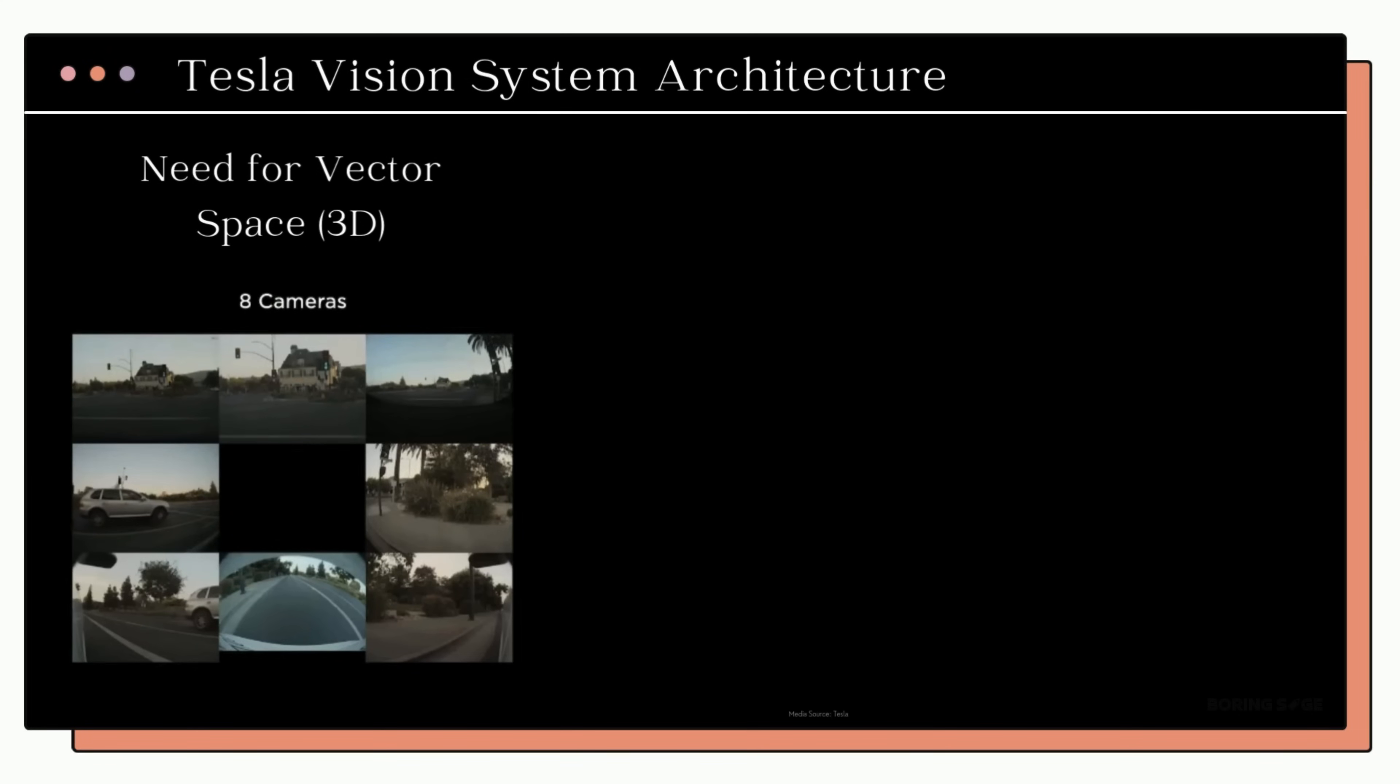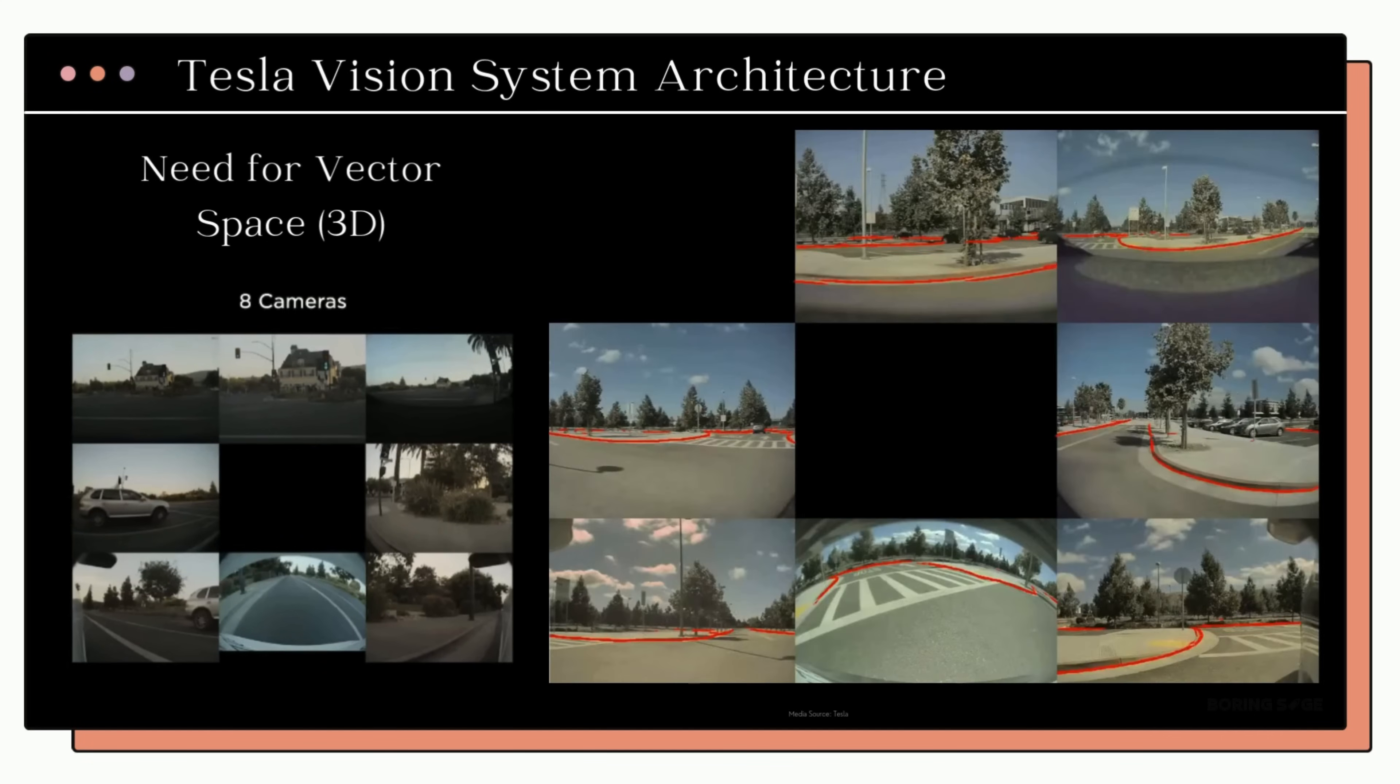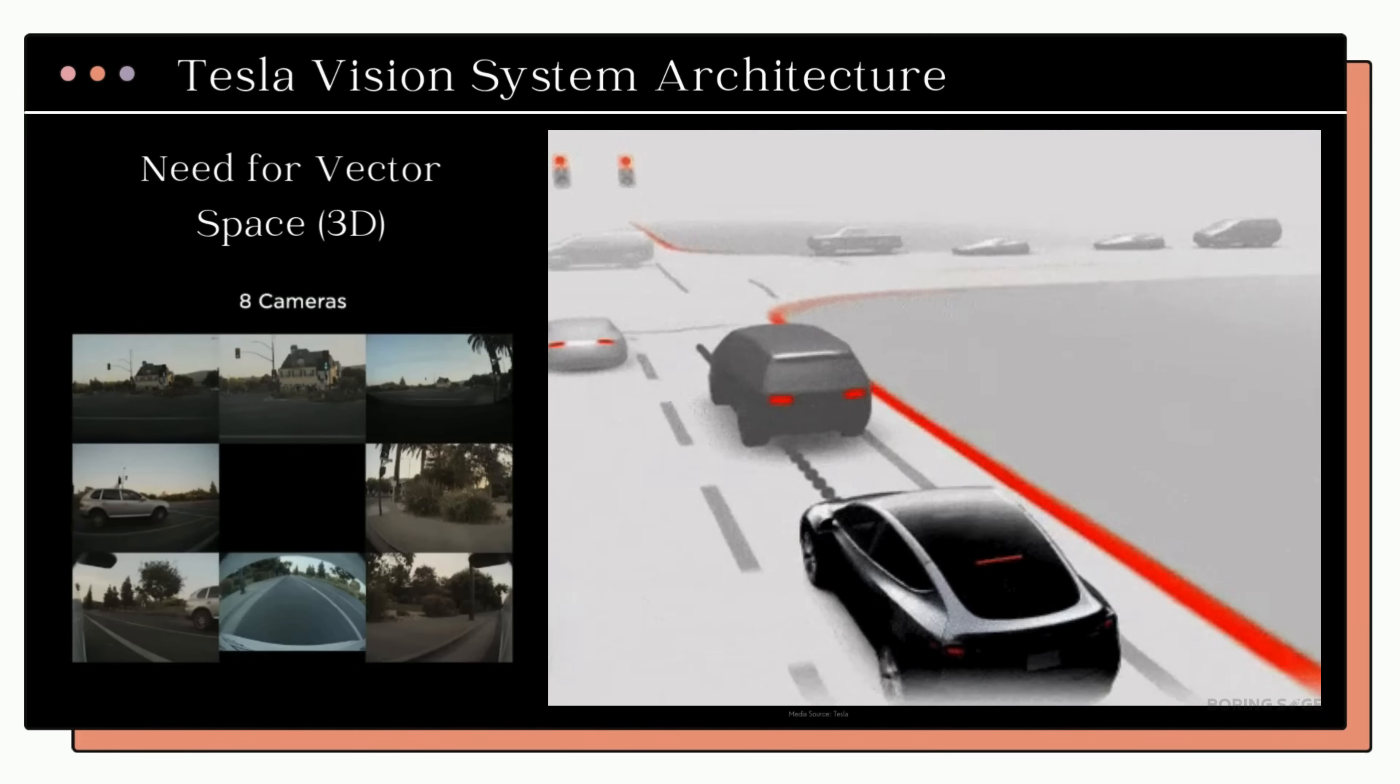The challenge that the team ran into is that even though they had eight cameras around the car, this system only produced flat 2D images. And because of that, it's really hard to figure out the elevation of roads, curbs, or to capture other important details about the car's surroundings. So to make driving safer, we really need a 3D view of the world around the car.